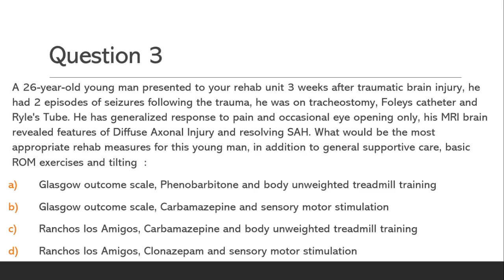Question 3. A 26-year-old young man presented to your rehab unit 3 weeks after traumatic brain injury. He had 2 episodes of seizures following the trauma. He was on tracheostomy, Foley's catheter, and Ryle's tube. He has generalized response to pain and occasional eye-opening only. His MRI brain revealed features of diffuse axonal injury and resolving SAH. What would be the most appropriate rehab measures for this young man, in addition to general supportive care, basic ROM exercises, and tilting?